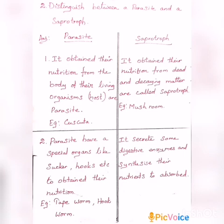Second point — Parasite: Parasites have special organs like suckers and hooks to obtain their nutrition. For example, tapeworm lives in the intestinal part of the human body. Saprotroph: It secretes some digestive enzymes and synthesizes its nutrition to absorb from dead matter.